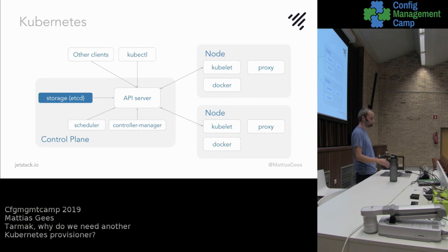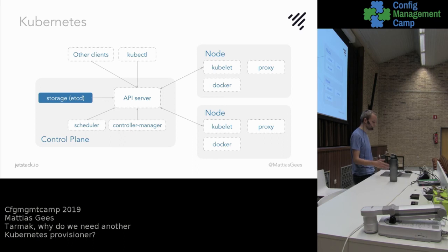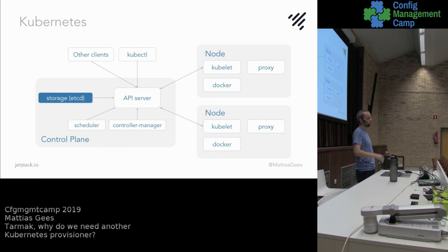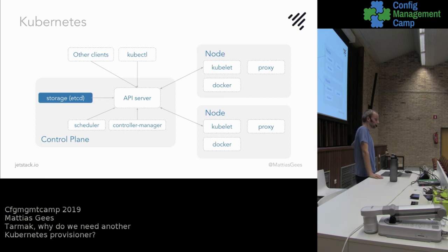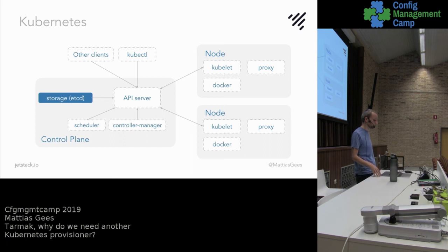On the nodes we have our runtime environment. In most cases this will still be Docker, but there are other runtime environments on the market now that can work with Kubernetes. Besides that, we have the kubelet — the interaction point between the Docker runtime, or your container runtime, and the Kubernetes API server. The kubelet asks which pods it has to run from the API server, then makes sure those pods are spun up on Docker. A third component is the kubeproxy, which creates the iptables or IPVS rules for making sure our services are reachable and routable.